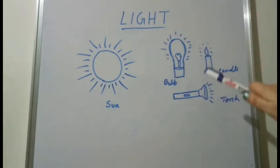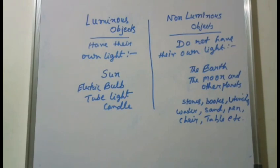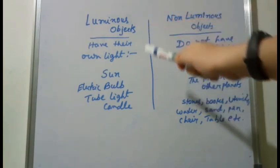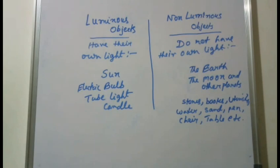Those all are man-made and artificial sources of light energy. Two important terms related to light are luminous objects and non-luminous objects. Objects which have their own light are called luminous objects — for example, the sun, electric bulb, tube light, candles, etc. Non-luminous objects are those which do not have their own light and are illuminated from natural or artificial sources, such as the earth, moon, other planets, stones, books, utensils, water, sand, pen, pencil — whatever you see in your surroundings that does not produce its own light.